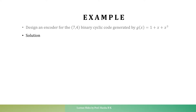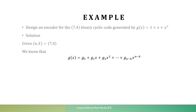Given n,k = 7,4, indicating the number of message bits is equal to 4 bits and the code word length is 7 bits — the input is 4 bits and the output is 7 bits. The general form of the generator polynomial G(x) = G0 + G1·x + G2·x² + ... + G(n-k)·x^(n-k), meaning G(x) is a polynomial of degree n-k.